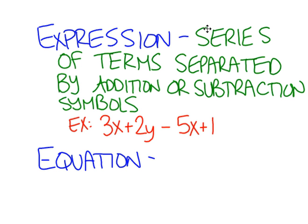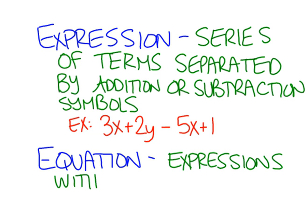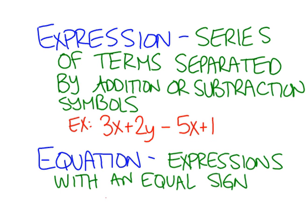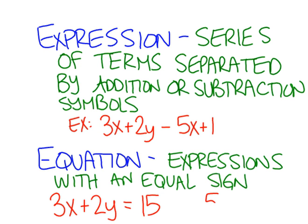An equation is when you have two expressions with an equal sign in between. So we could take our expressions from above: 3x plus 2y and set it equal to 15 — that would be a more advanced equation. Equations we might solve in this unit would be something like 5x plus 2x plus 1 equals 10. Both sides have an expression and they are separated by an equal sign.